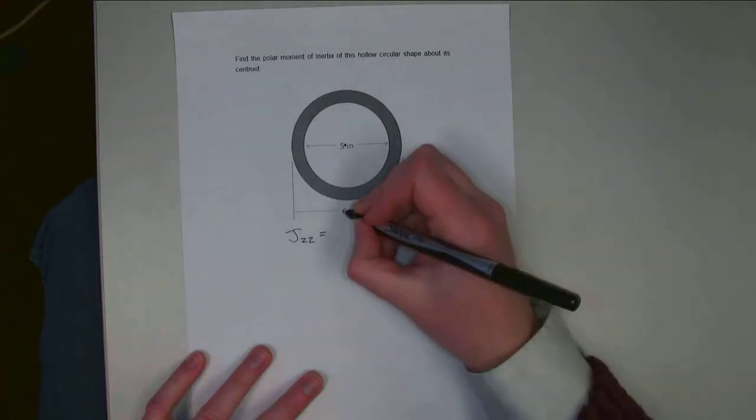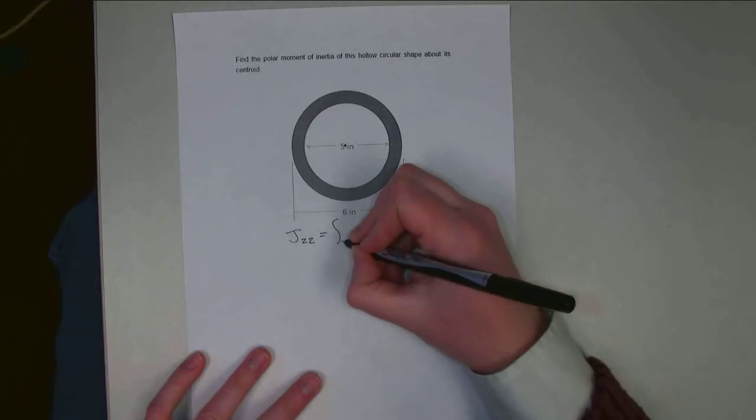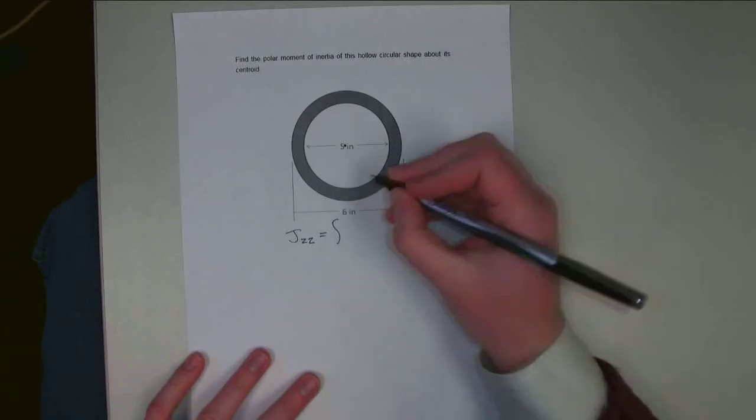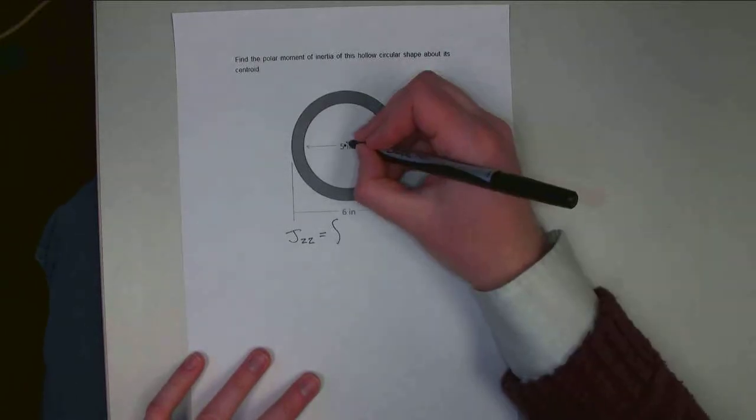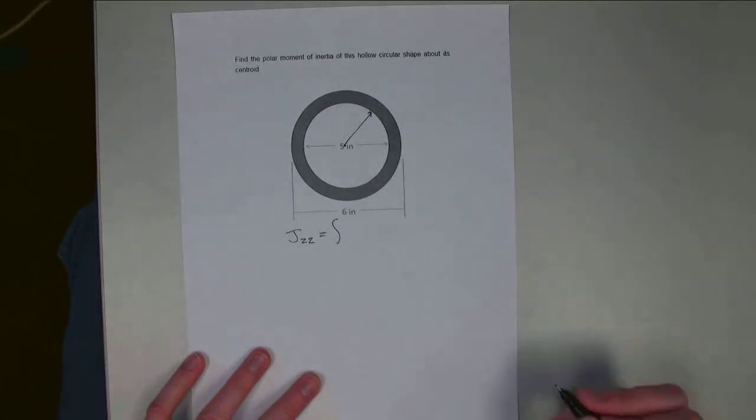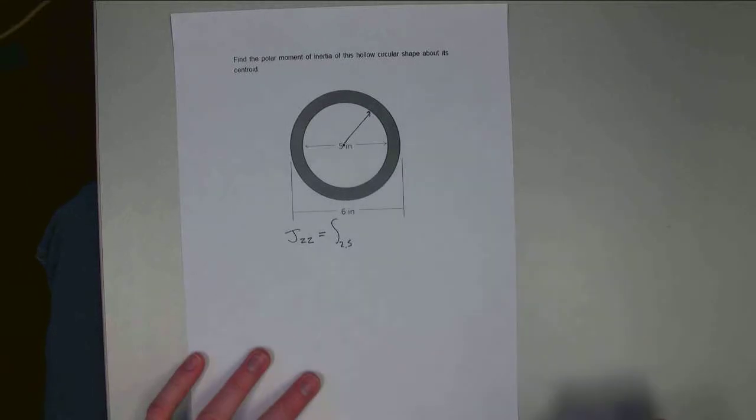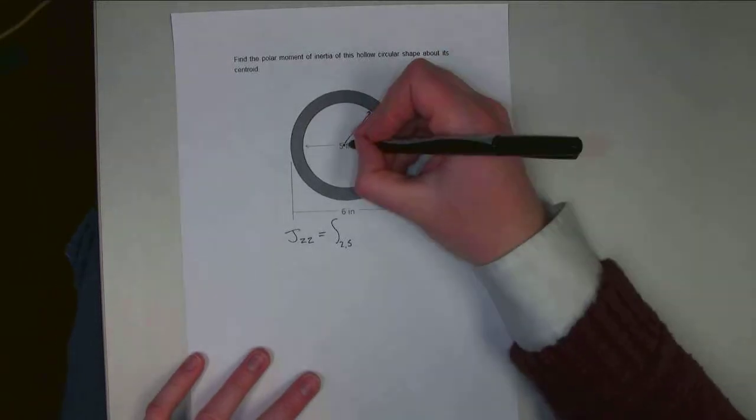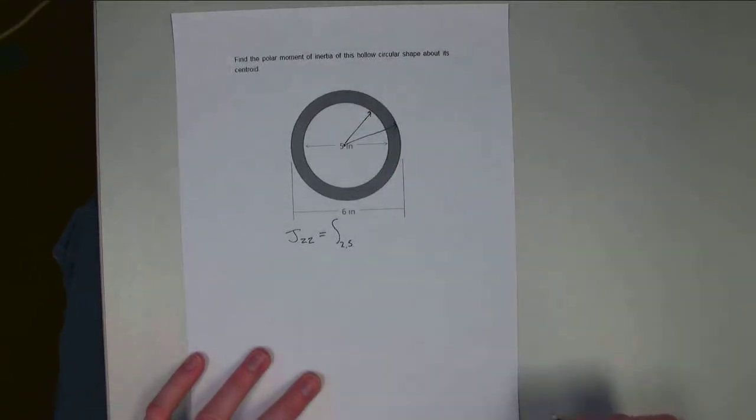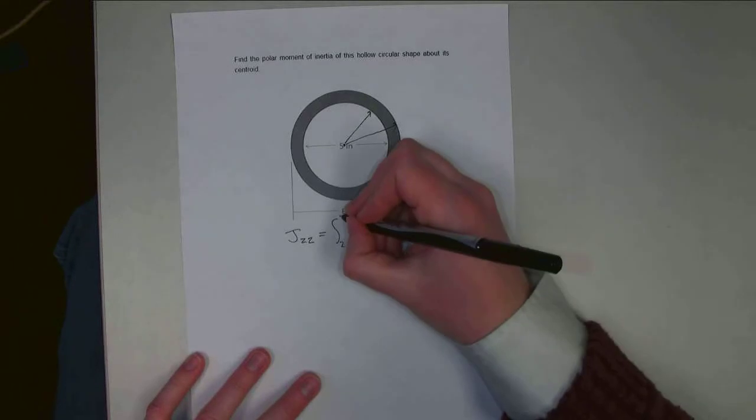It's going to be equal to the integral from the inner radius, and so since I don't have anything in the middle, my inner radius is going to be to this inside surface, so it's going to be 2.5 inches, and then to the outer radius, it's going to be up to my outer radius of 3 inches.